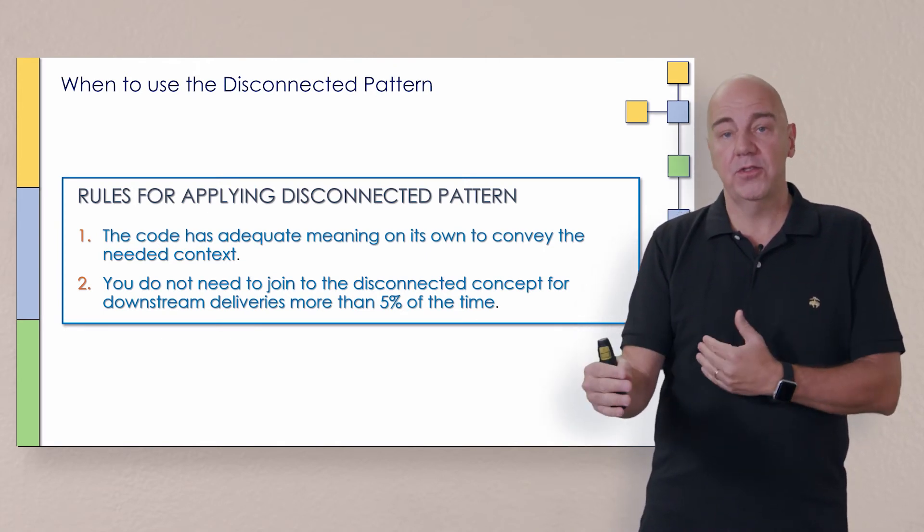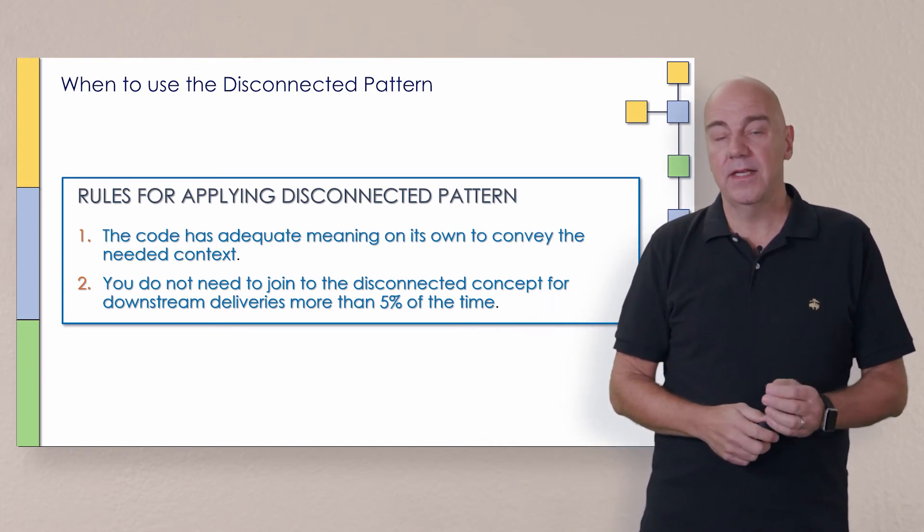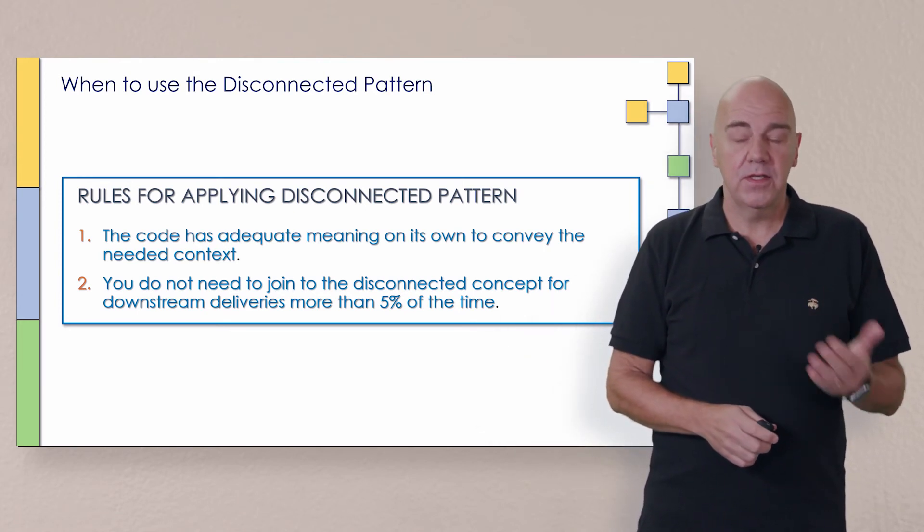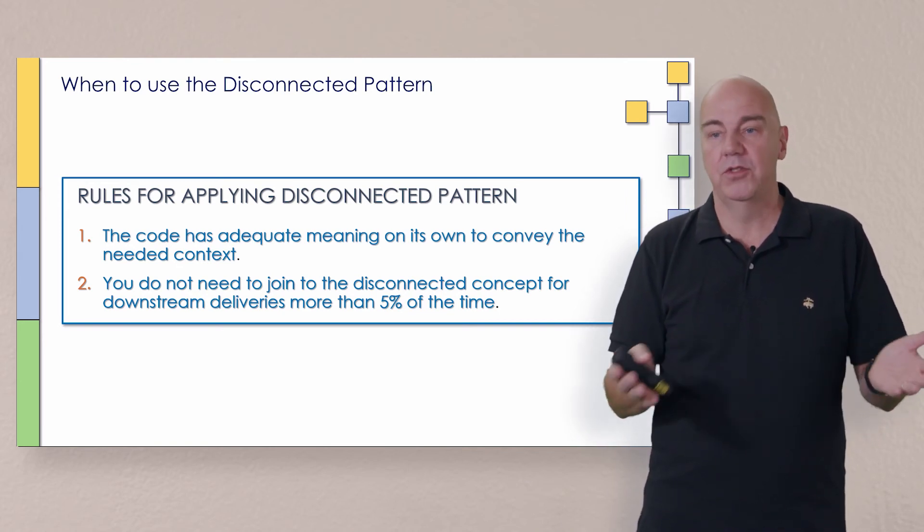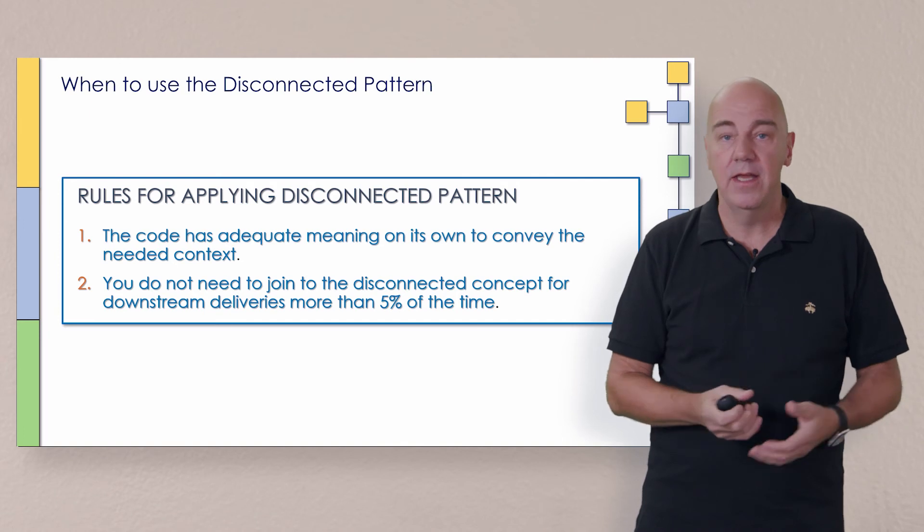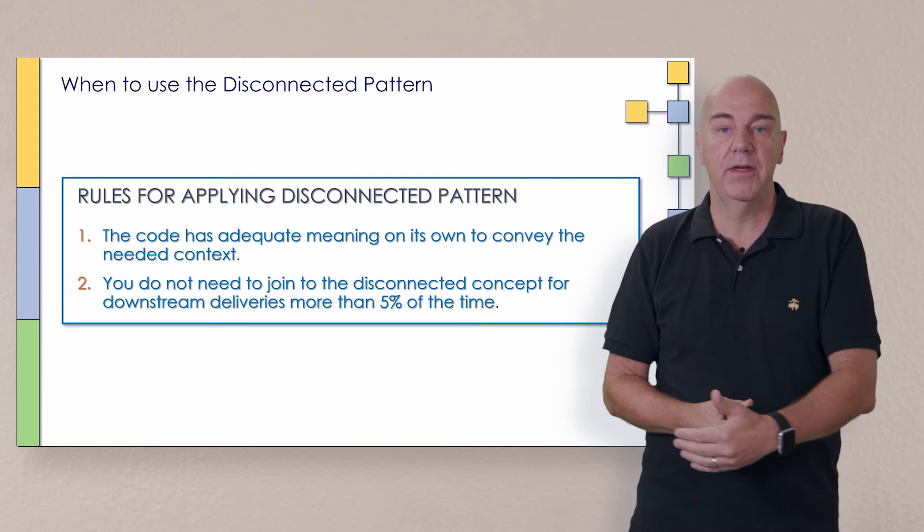The second one is you don't need to join to it, to that disconnected pattern downstream for deliveries more than 5% of the time. And I think it's important that it's not 0% because sometimes you may want to sync up all the postal codes to make sure they're accurate, do just kind of a quality check.